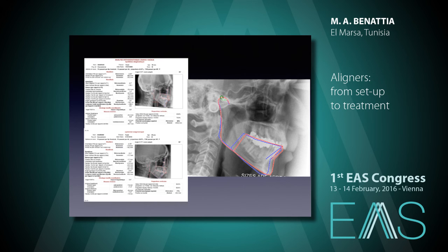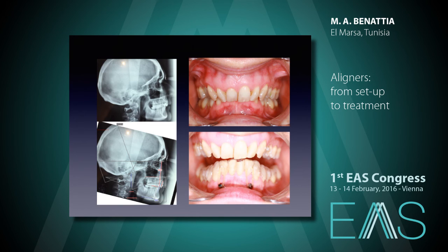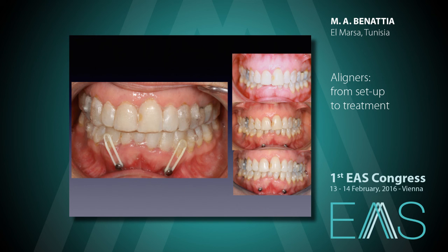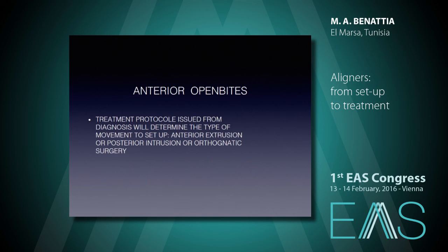In this case, the axis of the lower incisor is correct, but the degree of intrusion of the lower incisor is more than 2.5 millimeters. So I decided to use auxiliary wheels with mini screw, elastic, and buttons to improve the intrusion of the lower incisor. We can see the different stages in progress for correction of this supraclusion with lower intrusion. Now, the anterior open bites: the treatment protocol issued from diagnosis will determine the type of movement to set up — anterior extrusion, posterior intrusion, or orthognathic surgery.